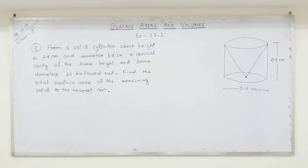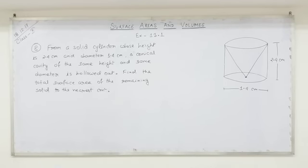Question number 8: From a solid cylinder whose height is 2.4 centimeters and diameter is 1.4 centimeters, a conical cavity of the same height and same diameter is hollowed out. Find the total surface area of the remaining solid to the nearest centimeter square.